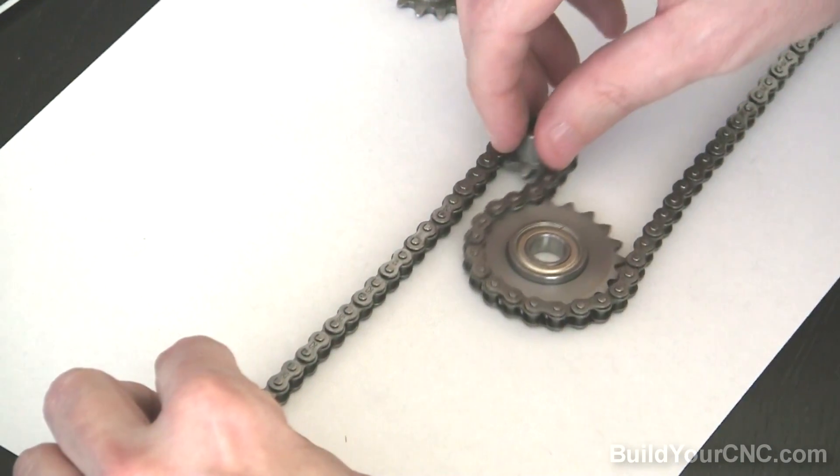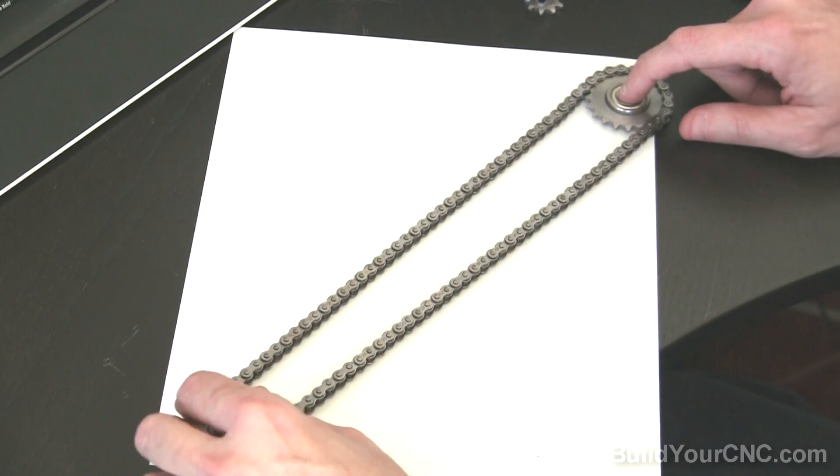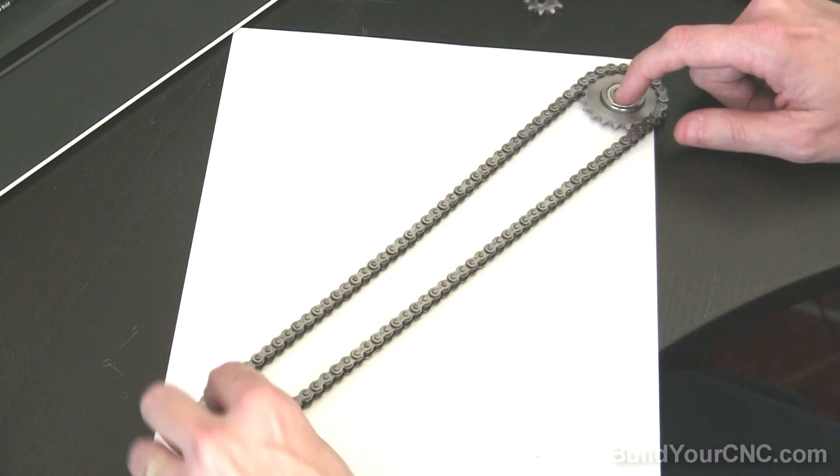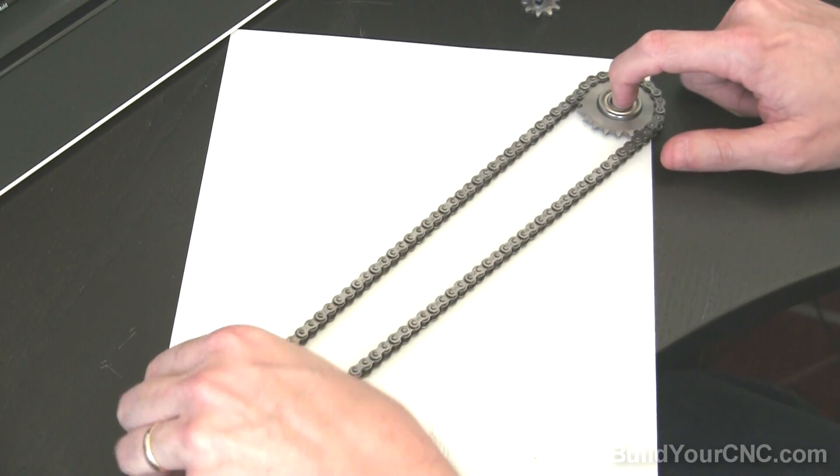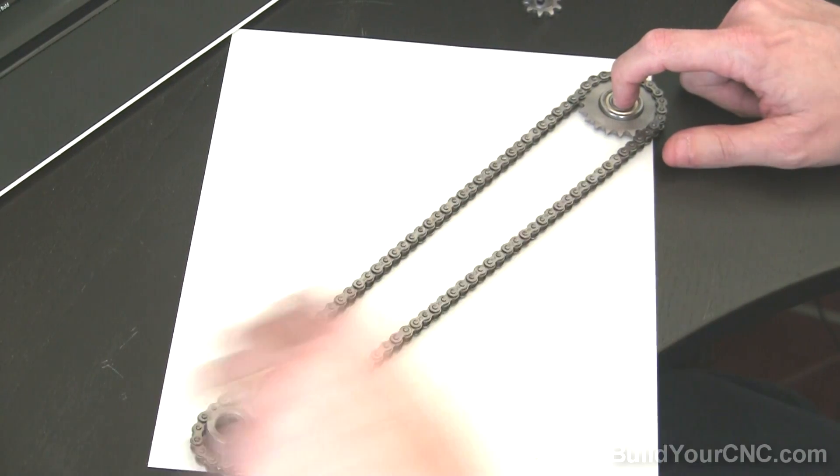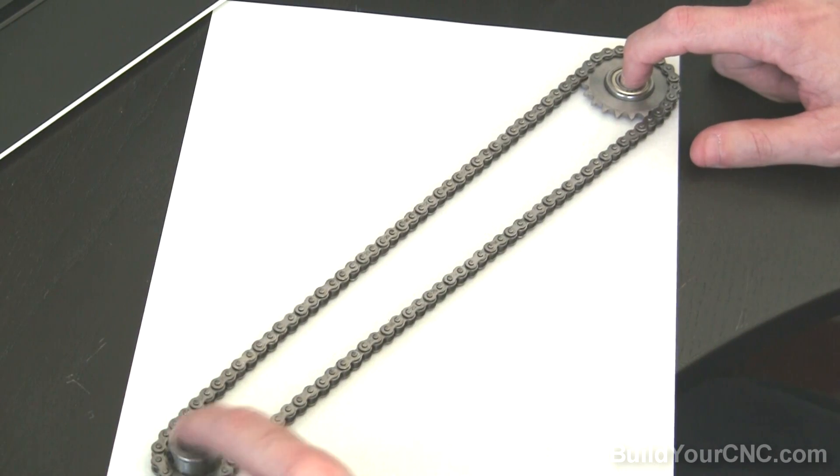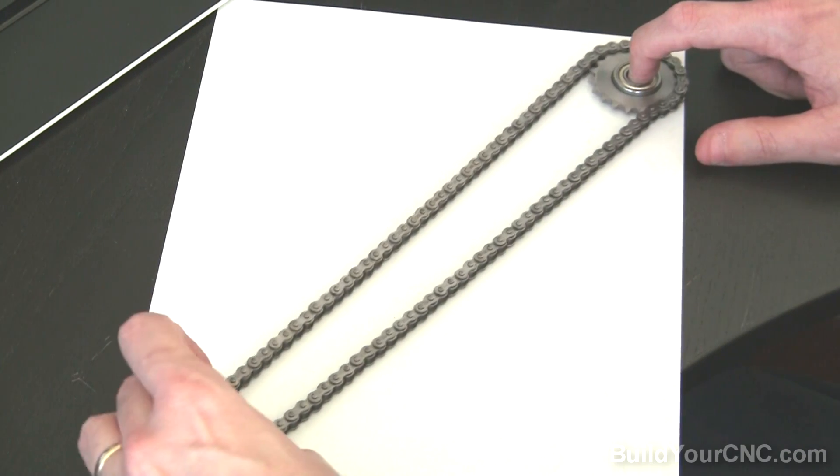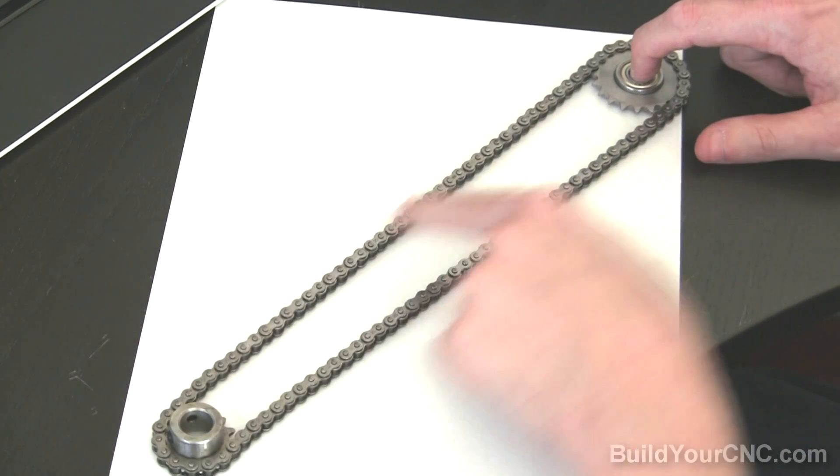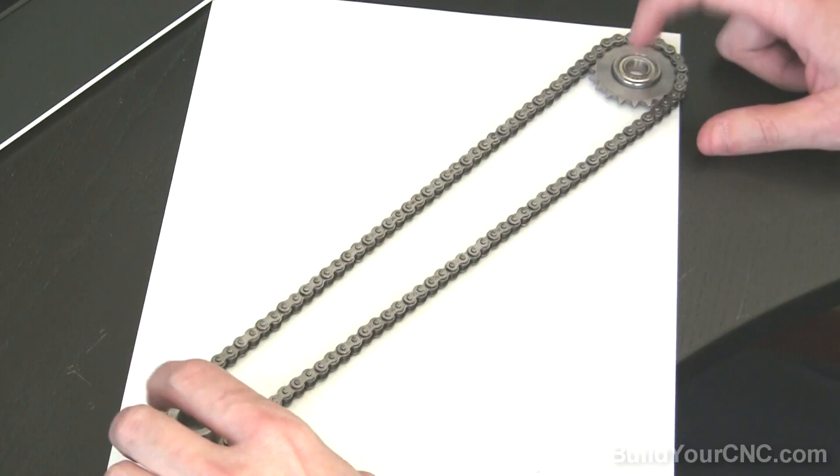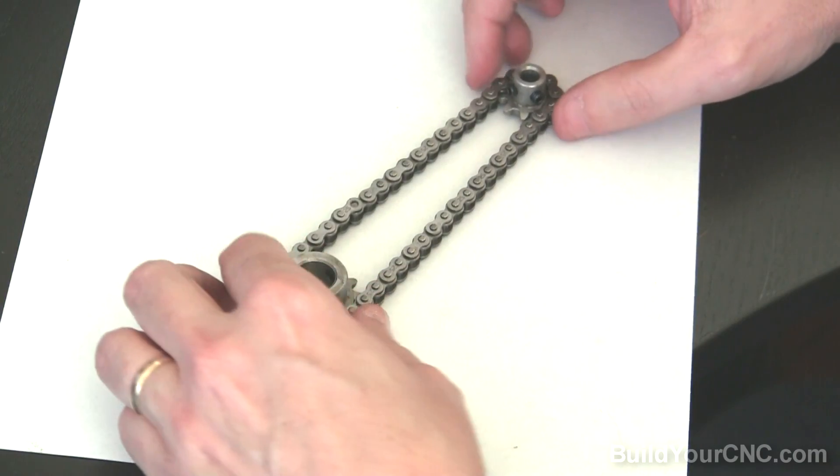Or you can have it in a configuration where it is in a loop and your drive sprocket is moving something that may be connected to one of the links. When it turns, the idler sprocket is just idling and the drive sprocket is being turned by a motor and the motor can turn in either direction and move whatever is on one of the links.